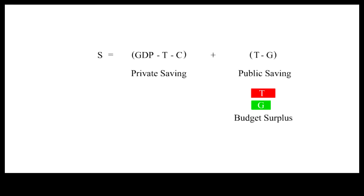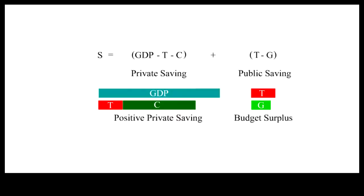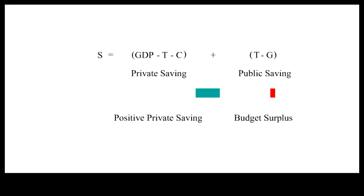When taxes T exceeds government spending G, there is a budget surplus. Subtracting the same level of taxes T and the assumed level of consumption C from GDP, there is also positive private saving. The sum of budget surplus and positive private saving must then be equal to investment.